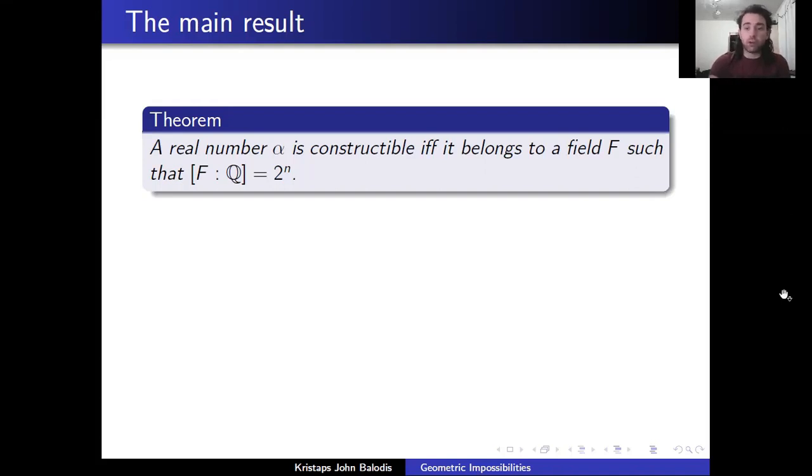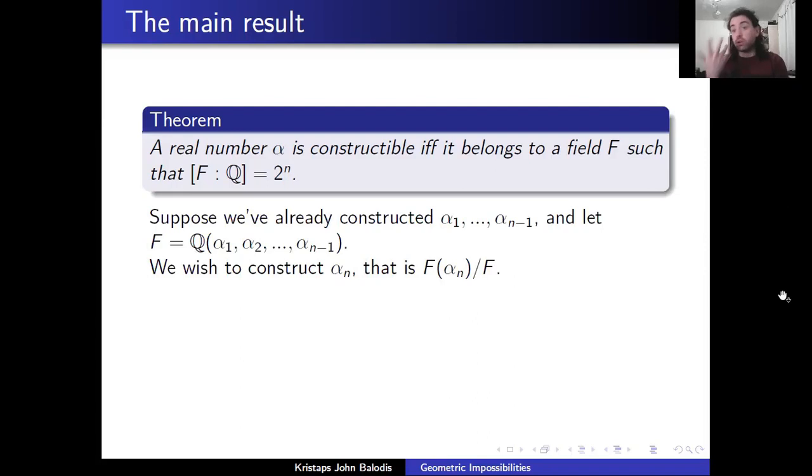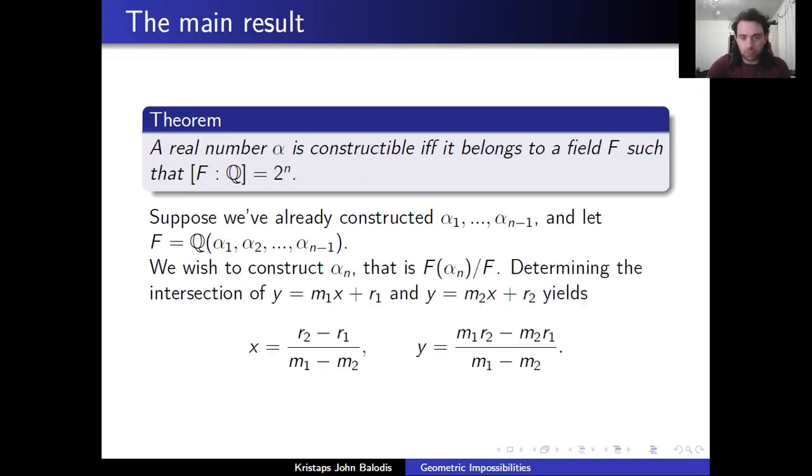So let's just jump right into it. Suppose we've already constructed some α₁ up to αₙ₋₁, and let F be this field where we've successively joined all of these numbers, α₁ up to αₙ₋₁. And we want to construct some αₙ. So we're supposing αₙ is some constructible number, and we're going to think about the field extension of just tossing in this one more constructible number. What are the possibilities?